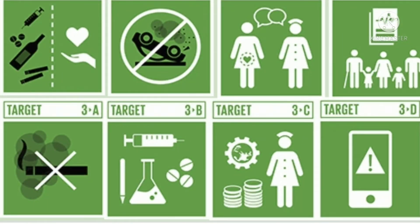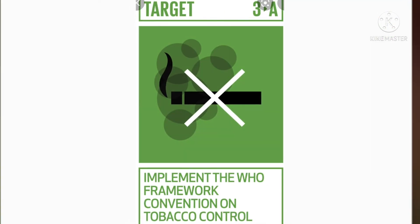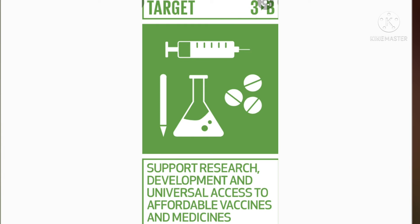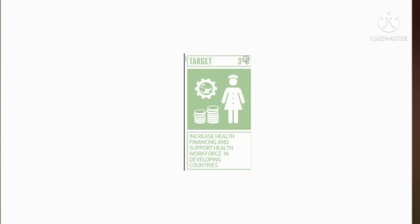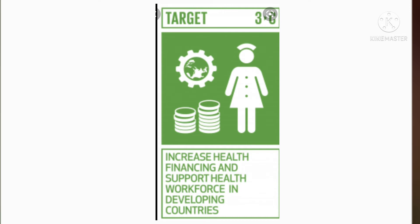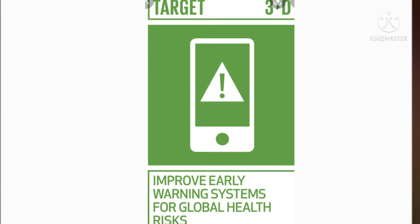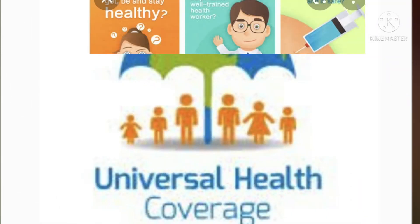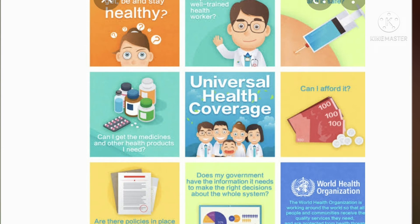The four means of achieving SDG 3 targets are: implement the WHO Framework Convention on Tobacco Control; support research, development and universal access to affordable vaccines and medicines; increase health financing and support the health workforce in developing countries; and improve early warning systems for global health risks.